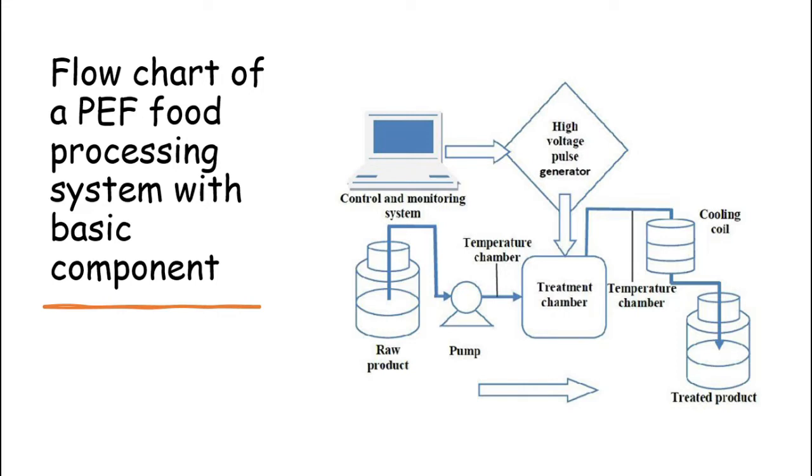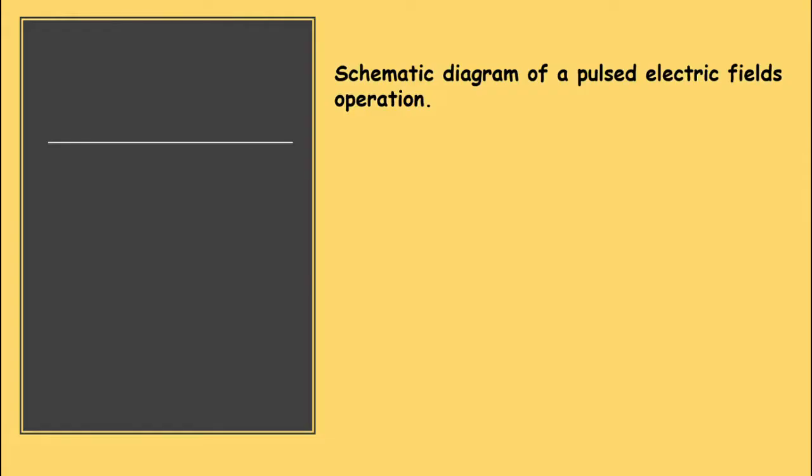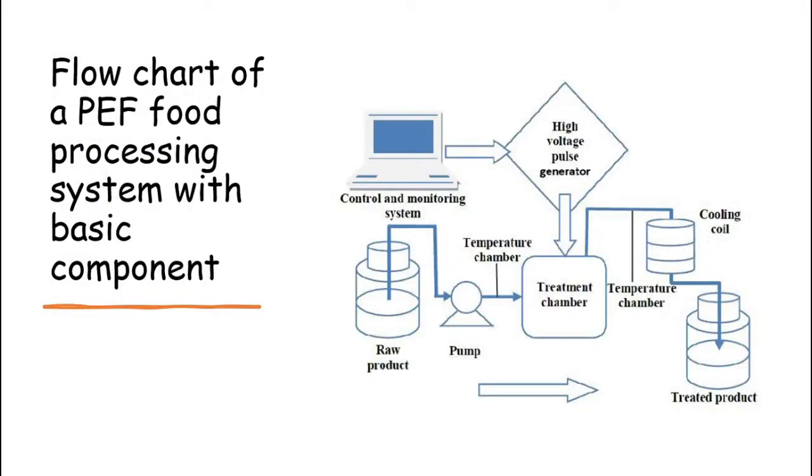The main components required for a PEF application are an impulse generation system and a treatment chamber. A crucial prerequisite for economic and efficient production is continuous operability with high flow rate capacity which has led to the development of continuous treatment chambers through which food is pumped or conveyed while being exposed to the electric field at ambient, refrigeration or elevated temperatures. Before treatment, heat exchangers may be used to preheat the media and after the treatment, the dissipated electrical energy may result in a temperature increase which has to be reversed before the product is packed. Aseptic packaging is required to prevent recontamination. One of the main advantages of PEF treatment is its continuous operability with very short processing time. This means that the system can be easily incorporated into existing processing lines.